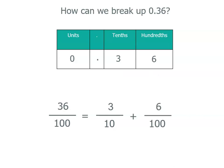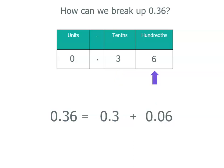Now we're going to actually swap these fractions for the decimal form. 36 hundredths is our number, 0.36. 3 tenths is 0.3. So we can actually write that as a decimal. And 6 hundredths is 0.06. We need the 0 just before the 6, because the 6 is in the hundredths place. So we've partitioned 0.36, or 36 hundredths to 3 tenths and 6 hundredths, using decimals.